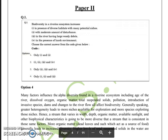Here they ask about that biodiversity in a riverine ecosystem increases and the four choices are first in the presence of diverse habitats with many potential issues, second option is with moderate amount of disturbance, the third option given was the river having a large woody debris and the fourth option was in the presence of harsh environment. So you have to select the right choices. The given options, the option number 4 is the correct option.